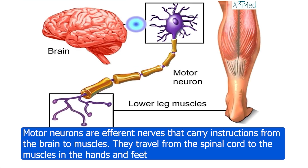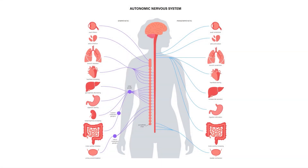The motor nervous system controls locomotion and body movement. The autonomic nervous system controls blood pressure, bladder mechanism, heart rate regulation, and sweat mechanism — all of these are regulated by the autonomic nervous system.